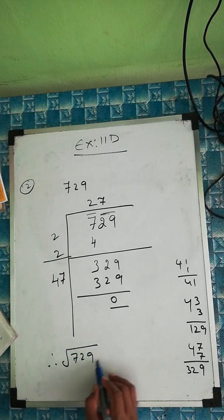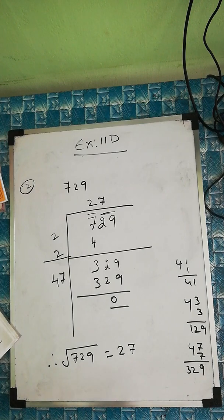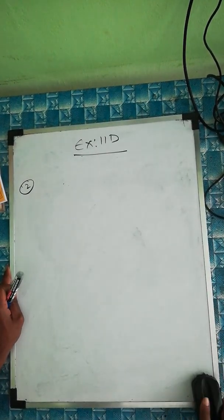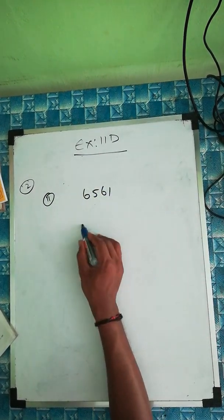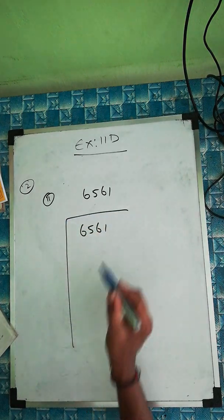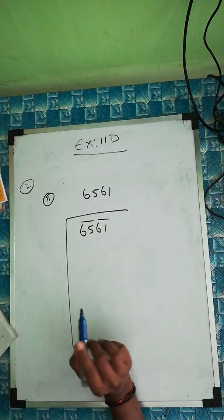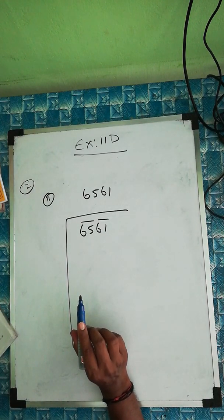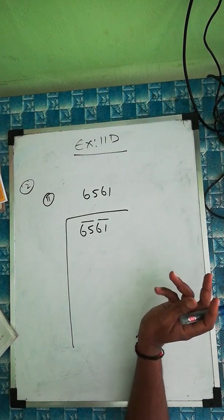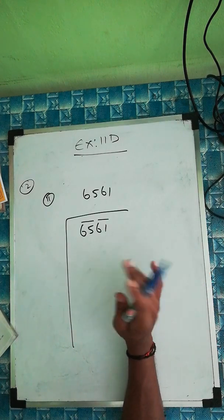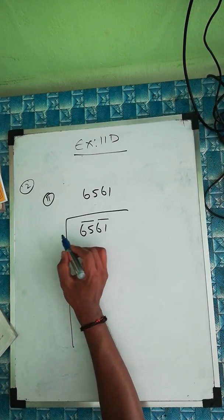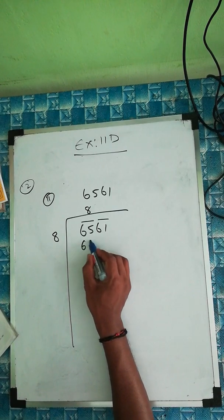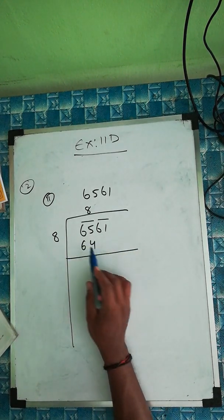The square root of 729 is 27 — that's the easy way to handle big numbers. The second question is 6561. Take the first two digits: 65. Which perfect square is nearest to 65? 8×8=64 works. 9×9=81 is too large. So we use 64. Subtract: 65 minus 64 equals 1. Bring down 61, giving 161. Write 8 again and double it: 8 plus 8 equals 16.